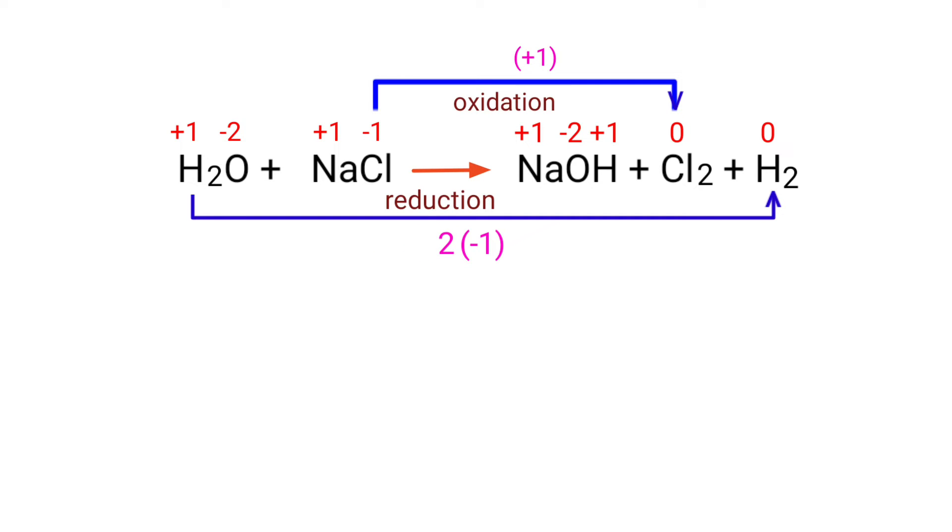Now you can make the increased oxidation number equivalent to the decreased oxidation number. To do this, you can multiply the increased oxidation number by a coefficient of 2.